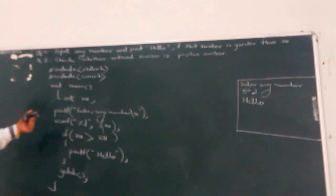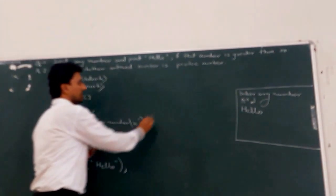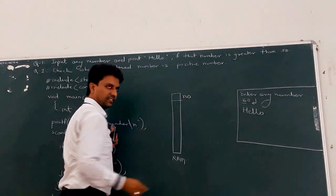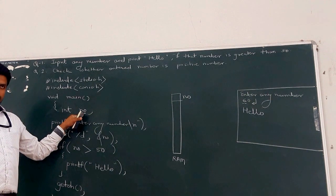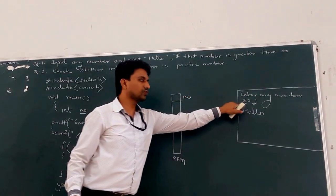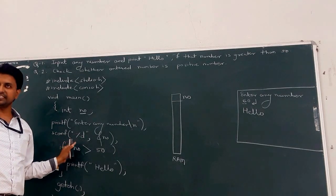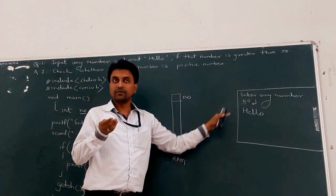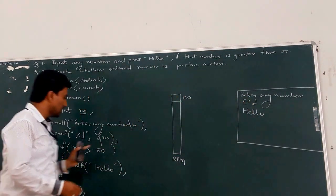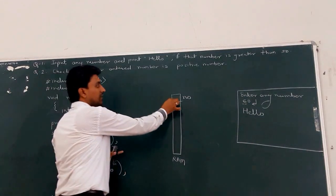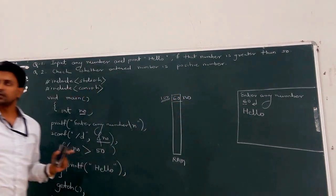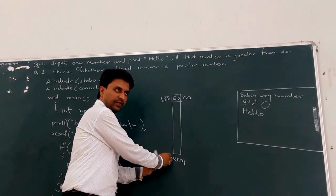What is the execution flow of this program? First, memory management — two bytes are reserved in RAM for the 'no' variable. Next, printf prints 'enter any number' on the console. The cursor then blinks for taking the value from the user. Suppose the user enters 60 and presses enter — this value is moved to the address of the NO variable. Suppose the address is 100; at address location 100, the value 60 is stored.